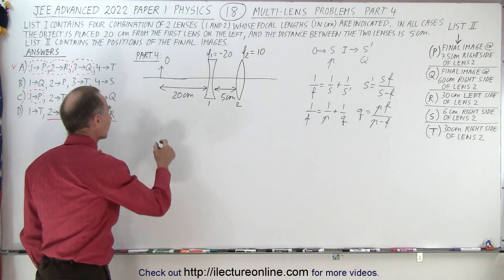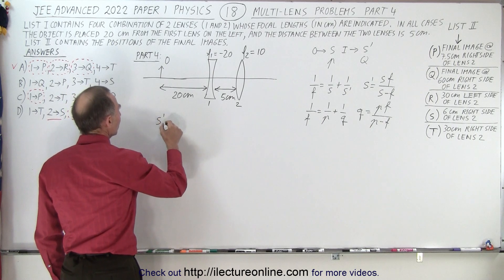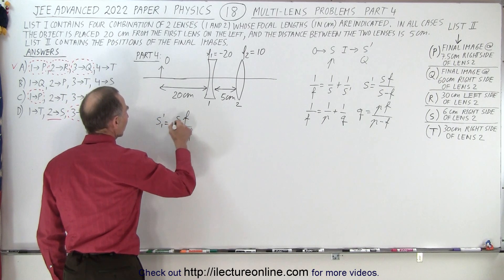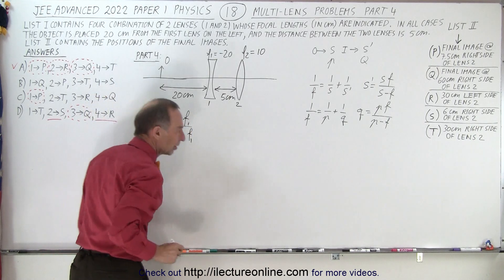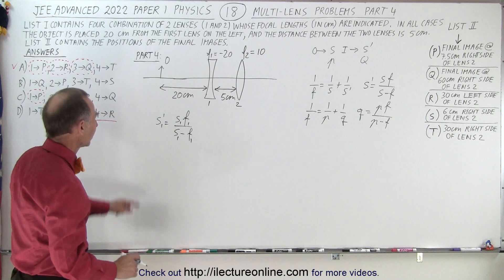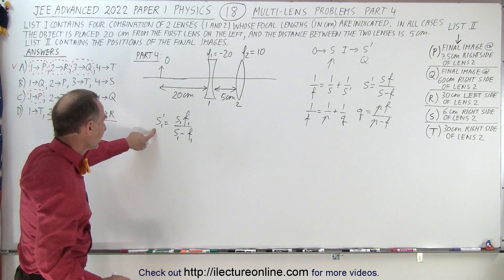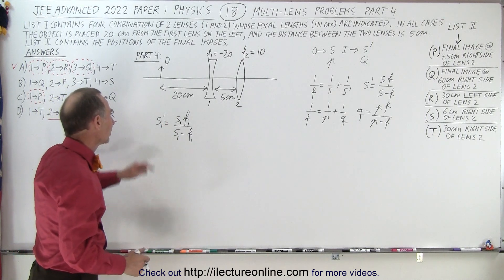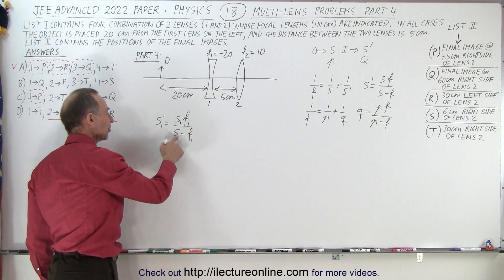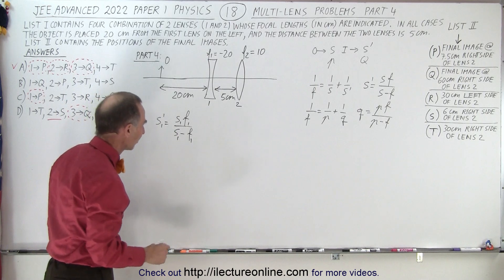So starting out with finding the first image, we write S prime is equal to SF over S minus F. And of course, we're working on the first image, and therefore we put subscript one for everything. The image distance for one is equal to the object distance times the focal length of the first lens divided by the object distance minus the focal length of the first lens.